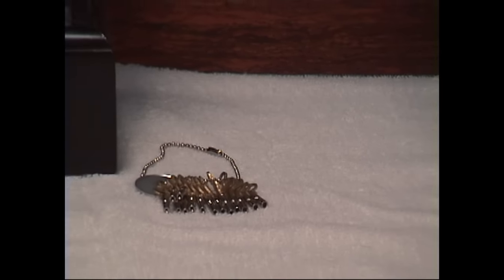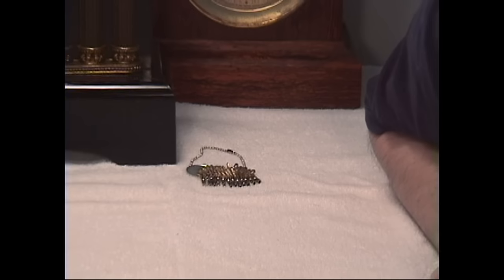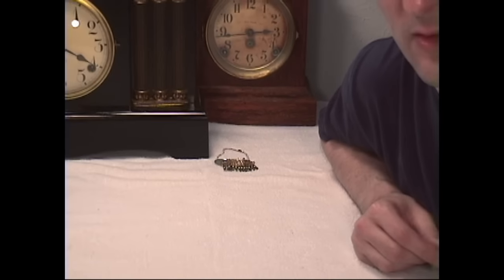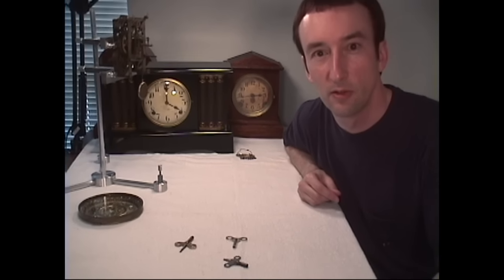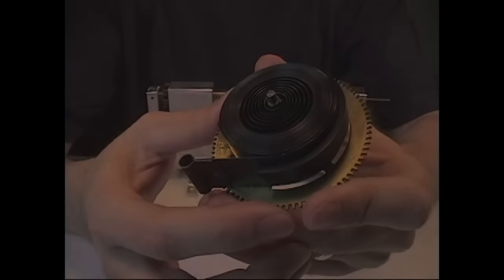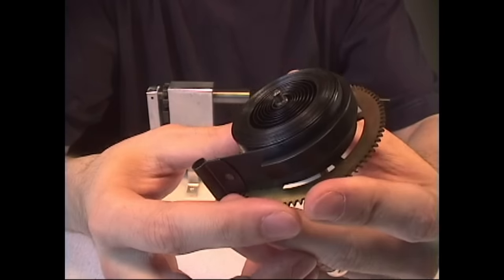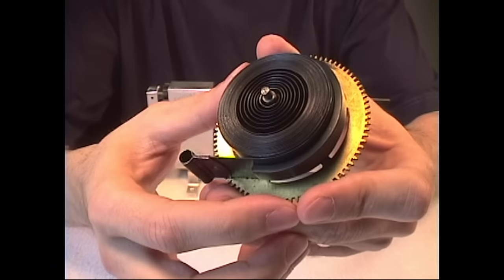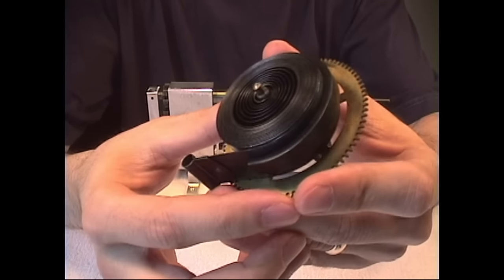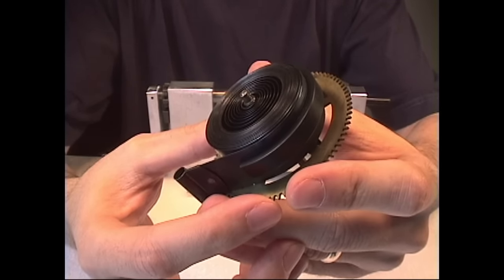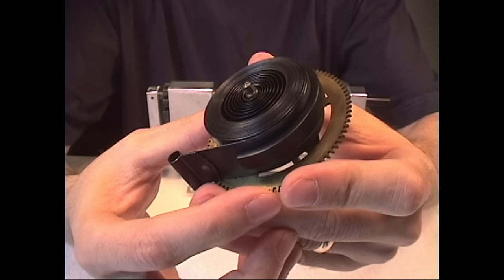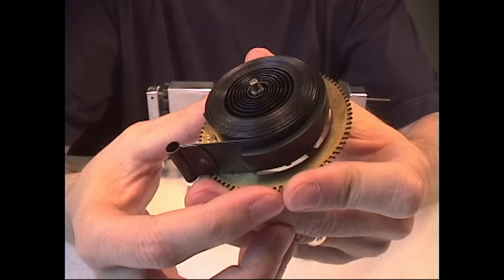Next thing we're going to talk about is some common tools that you may have around the house if you're a handy person or a hobbyist that you can use to repair clocks. The first thing we need to do is we need to remove the mainspring from the wheel in order to clean the mainspring, because the mainspring wheel will be cleaned separately from the wheel. The wheel will go in with the other parts into the cleaning solution. The mainspring is cleaned separately.